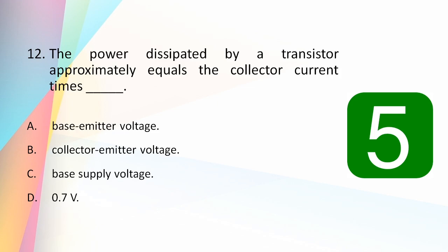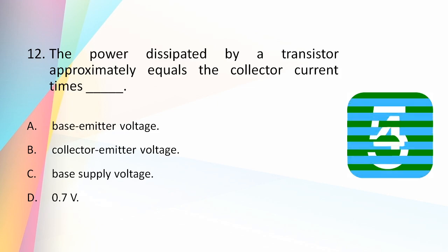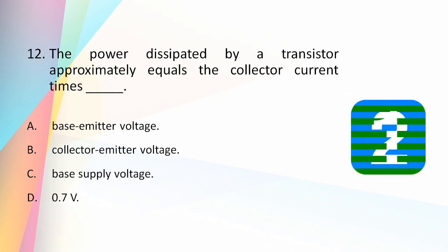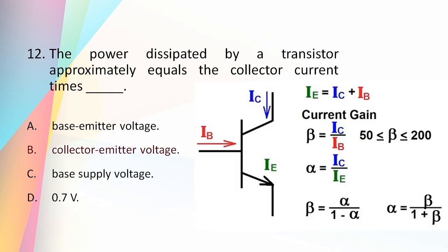The power dissipated by a transistor approximately equals the collector current times: base-emitter voltage, collector-emitter voltage, base supply voltage, or 0.7 volts? The answer is collector current times the collector-emitter voltage. In the common emitter configuration, the power dissipated by a transistor is calculated by multiplying the collector current and the collector-emitter voltage. This power dissipation is the output power consumed by the transistor.